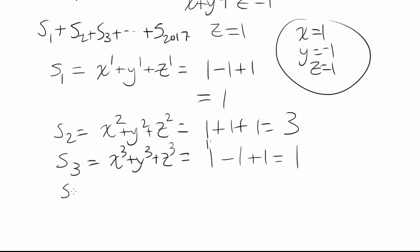How about S sub 4? That's x to the fourth plus y to the fourth plus z to the fourth, which is 1 to the fourth plus negative 1 to the fourth, which is positive 1, plus 1 to the fourth. Look at this. 1, 3, 1, 3, 1, 3. We have a pattern.